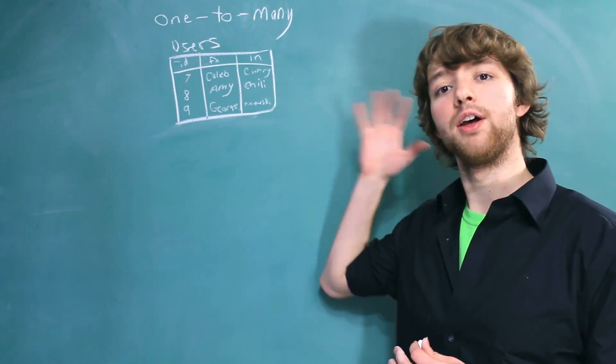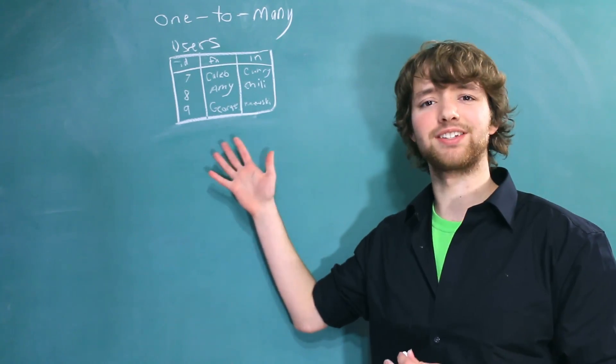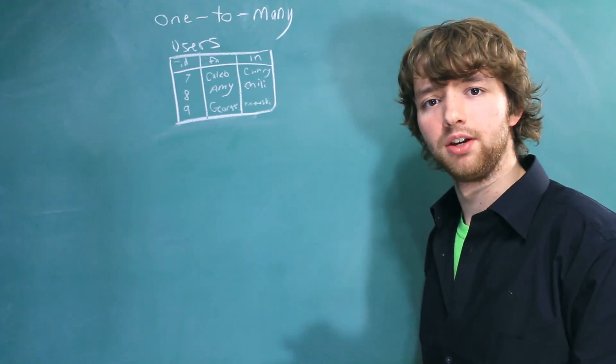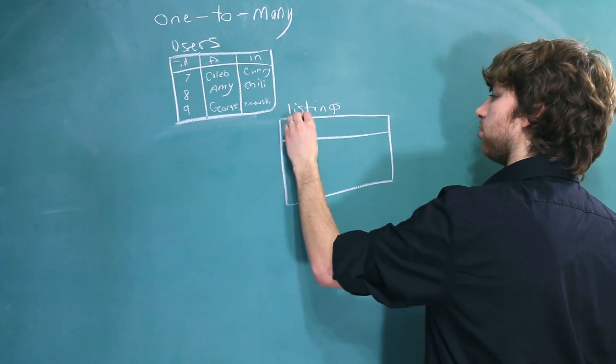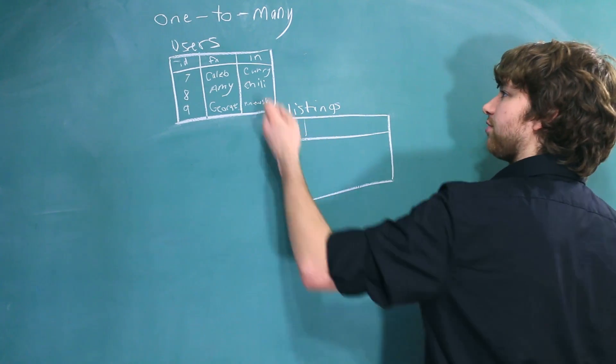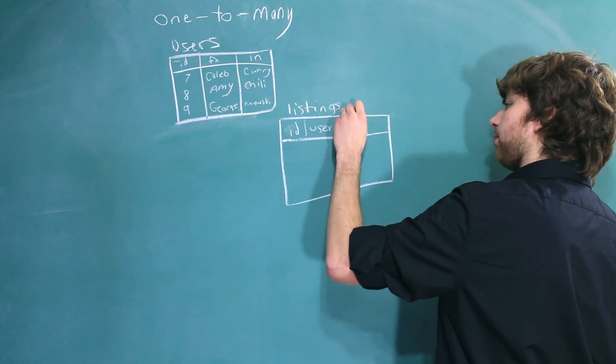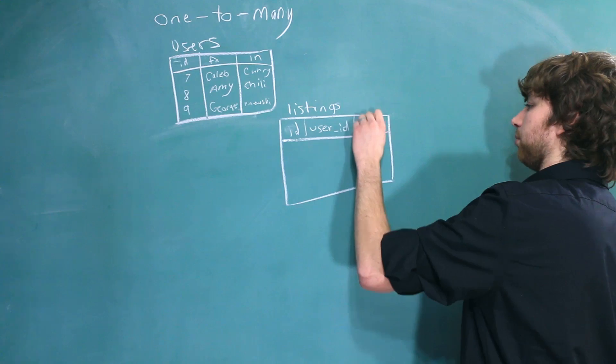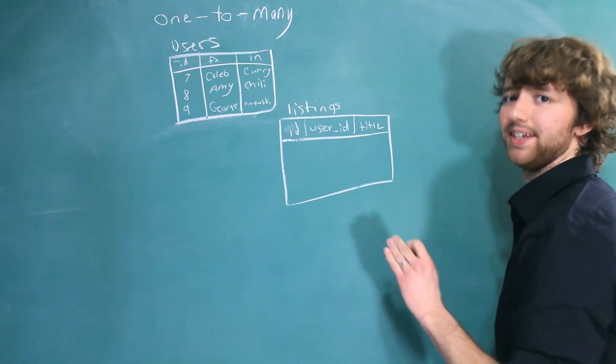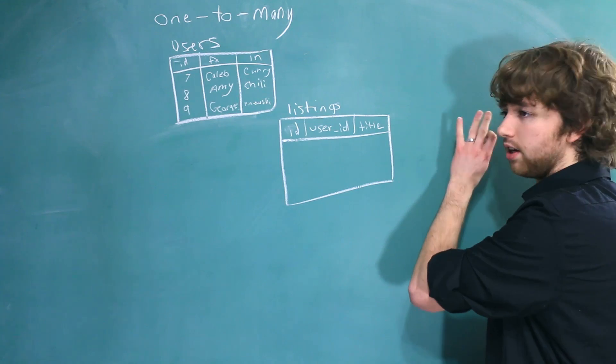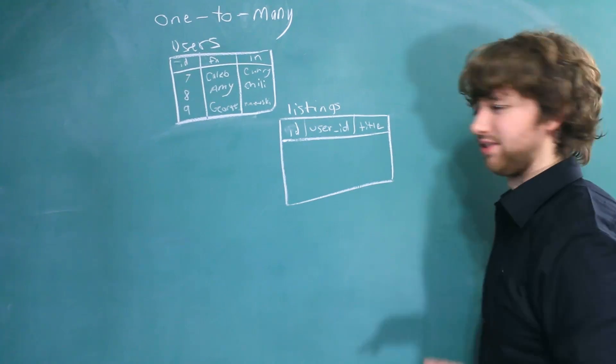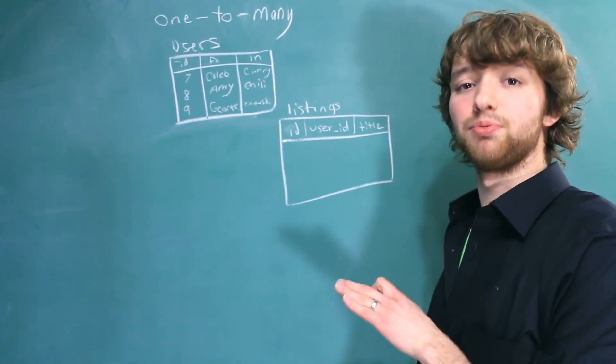And these are the users that are going to create listings on our bidding website. So this will become our listings table, and the columns will be the ID, and then a reference to the user ID, and then we can just say title, for example. If we wanted to get really in-depth with our bidding website, we could have a description and quality and all of that good stuff, but this is plenty for now.